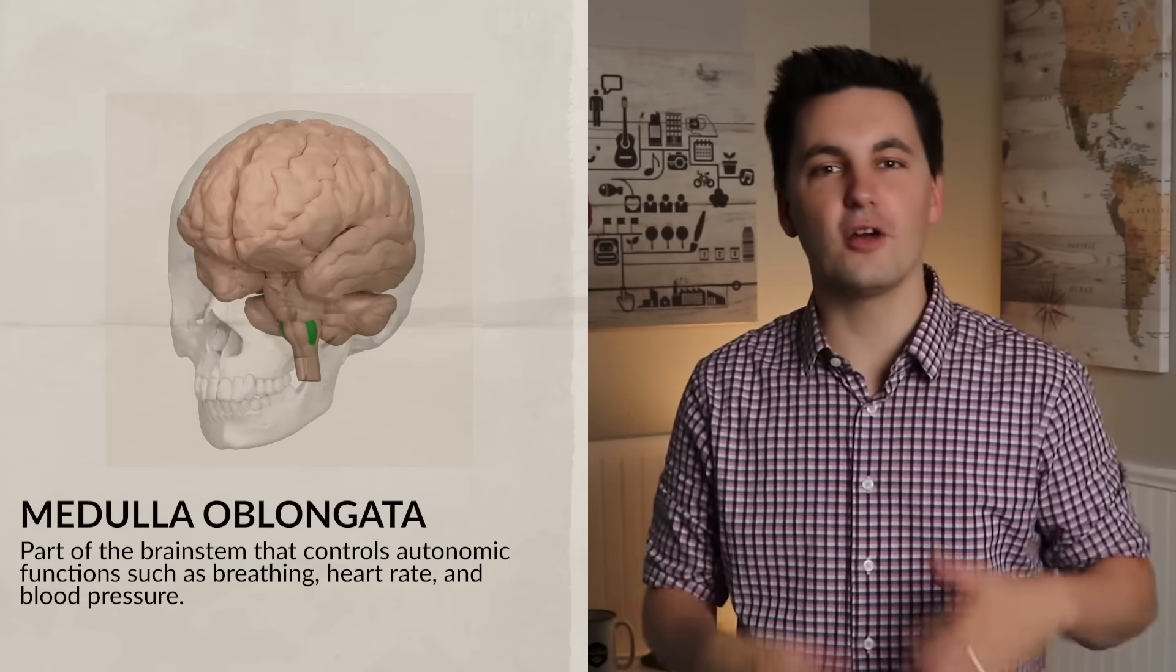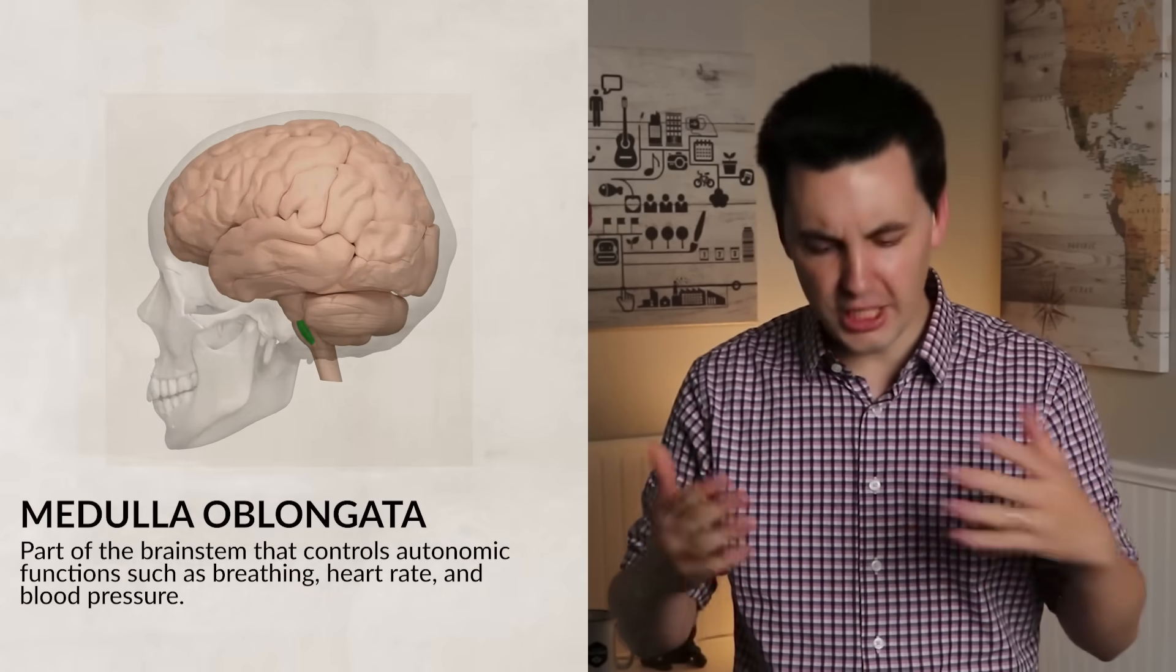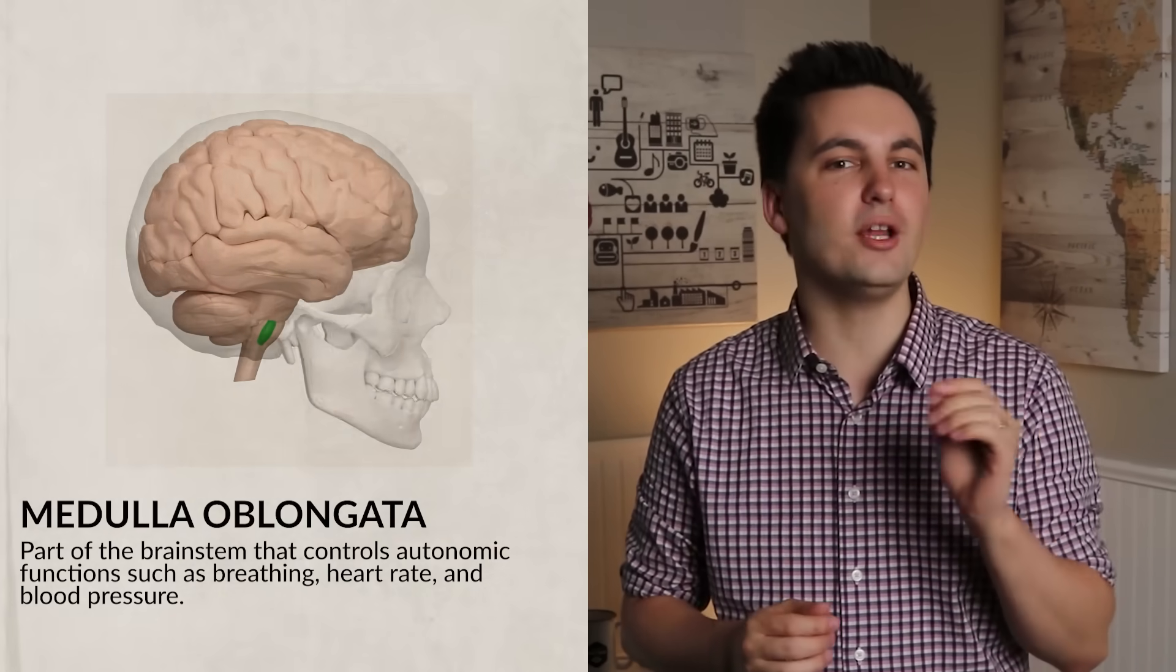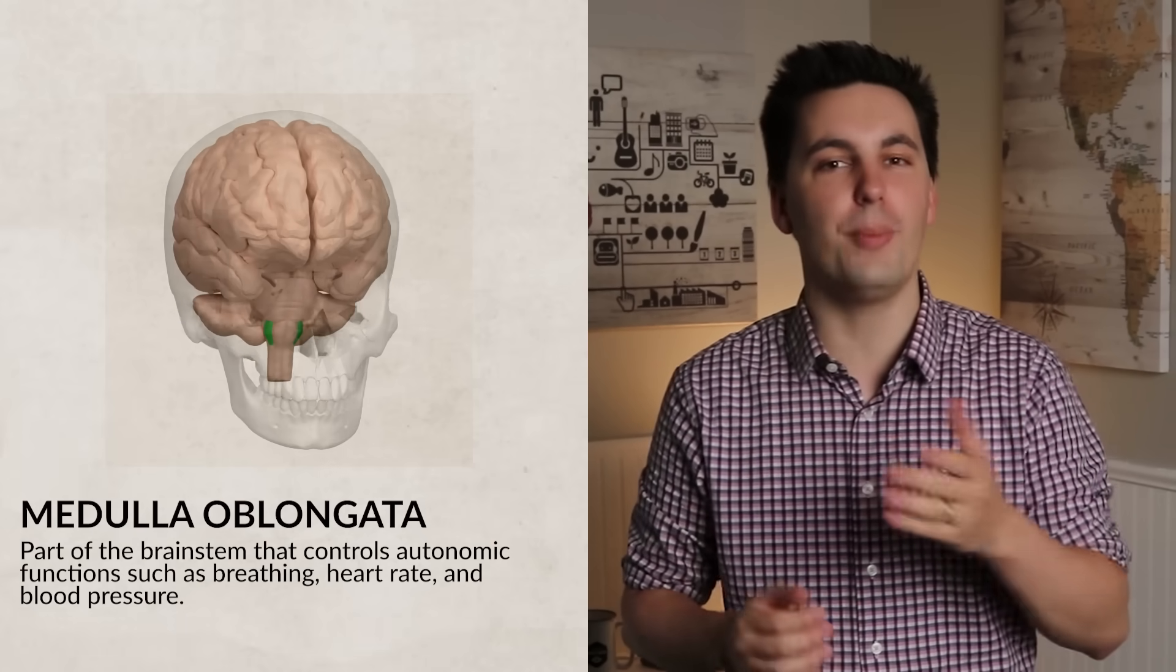Starting out, the hindbrain is made up of the pons, the medulla oblongata, and the cerebellum. These parts of the brain allow us to survive by controlling our basic biological structures. The medulla takes care of important autonomic functions. These happen without us consciously thinking about them. It's located right above the spinal cord and below the pons. This part of the brain is going to regulate your cardiovascular and respiratory system.